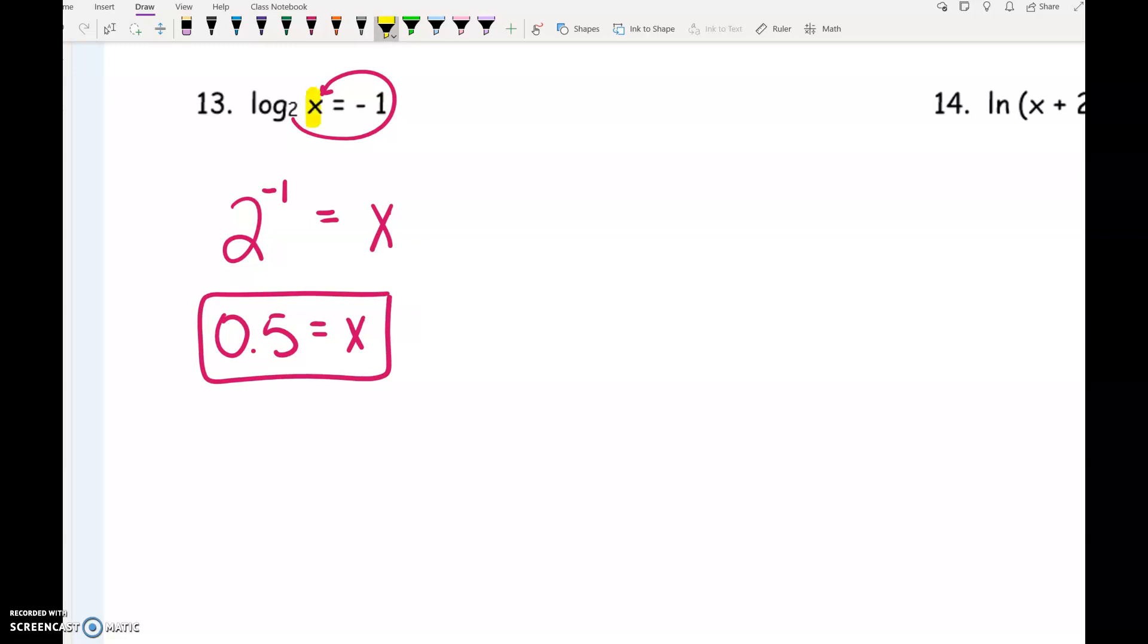If I put that 0.5 inside this log, we would have the log base 2 of positive 0.5, which is totally fine. So that answer is good.